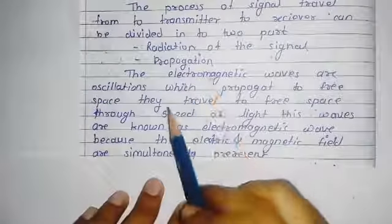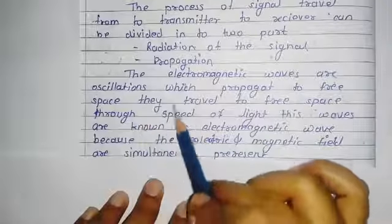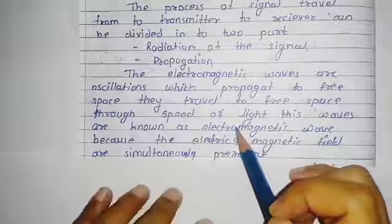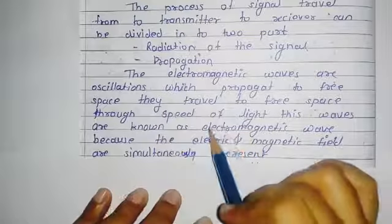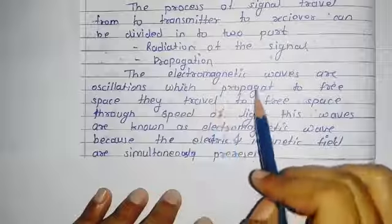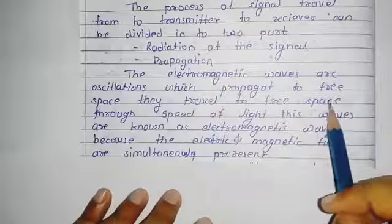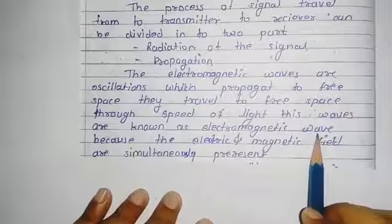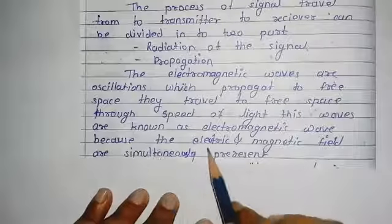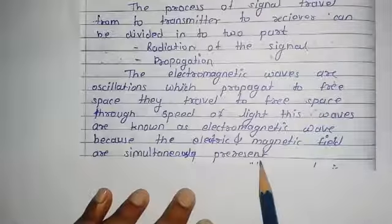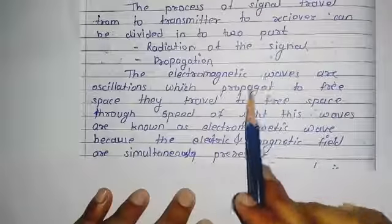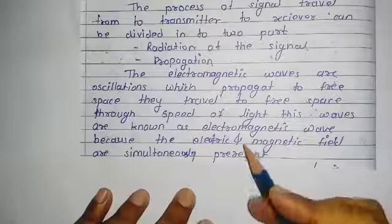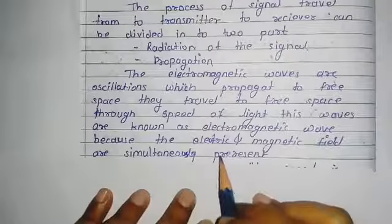The speed of light is 3 × 10⁸ metres per second. This wave is called an electromagnetic wave because the electric and magnetic fields are simultaneously present, as we have seen in the diagram.